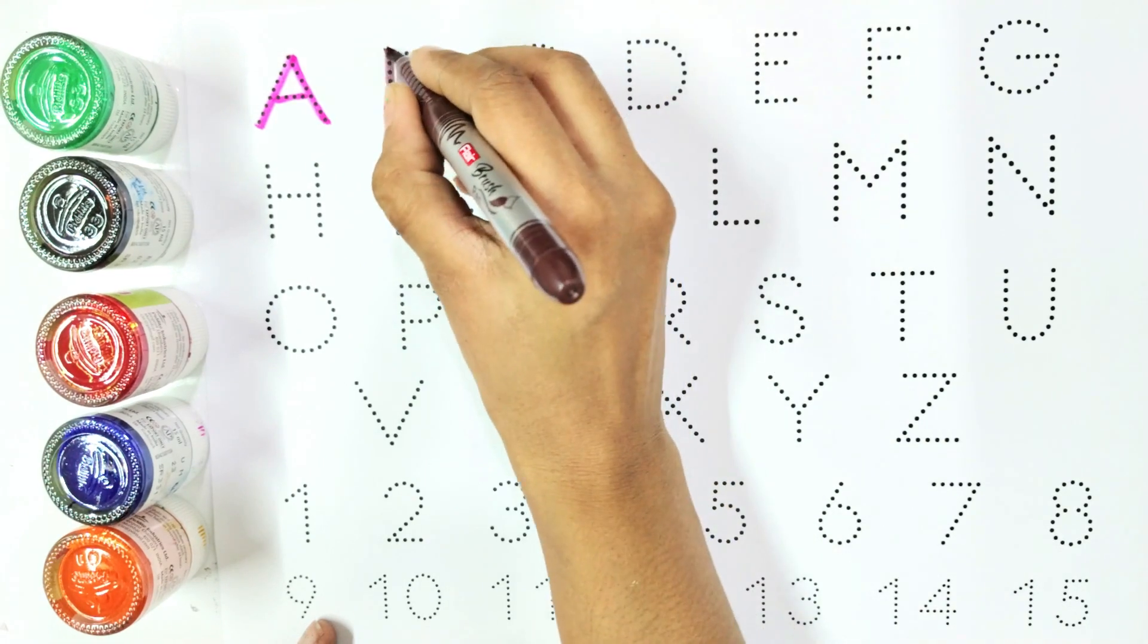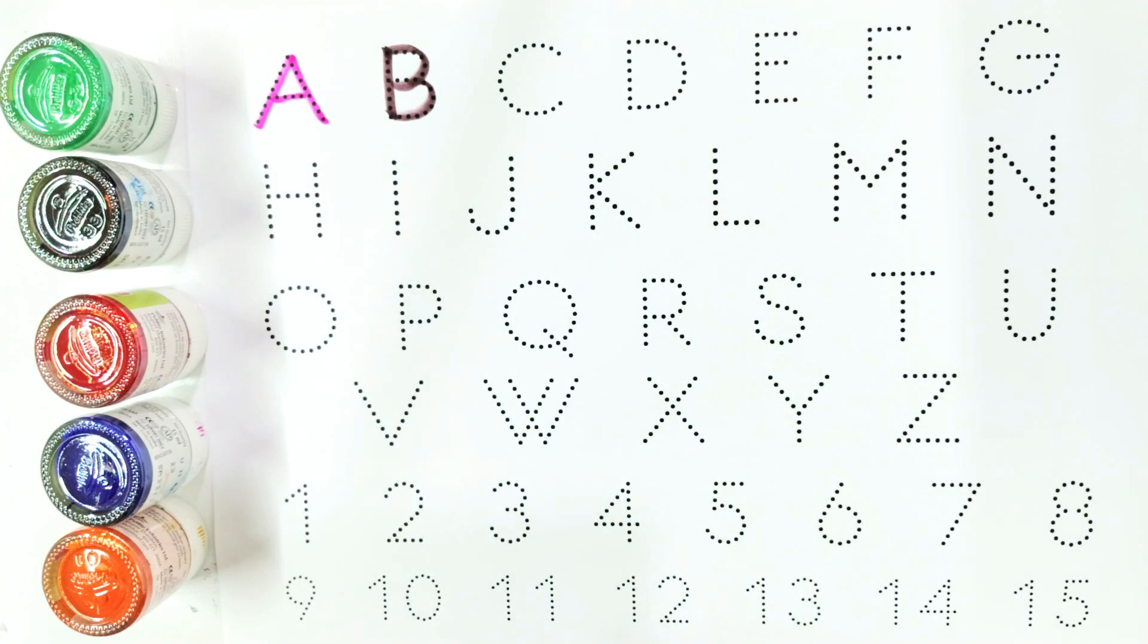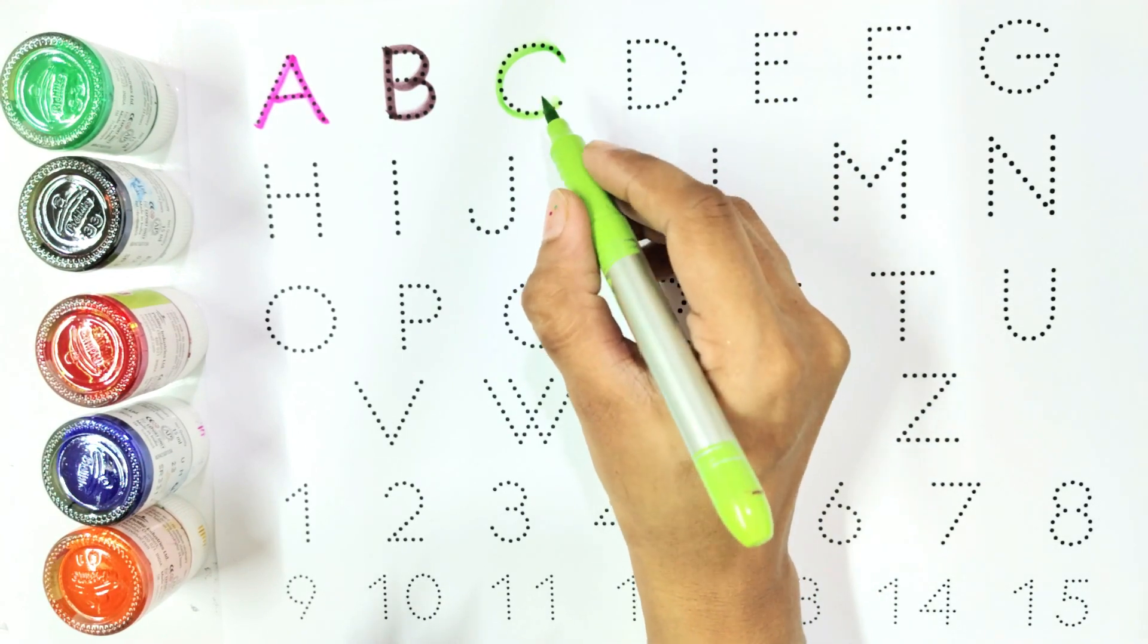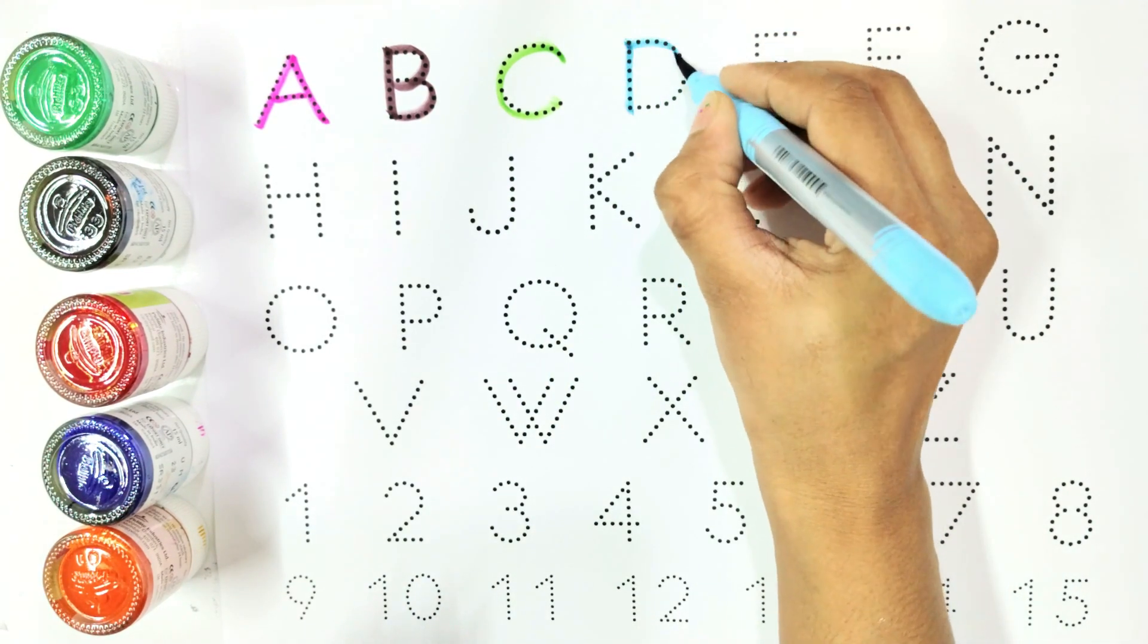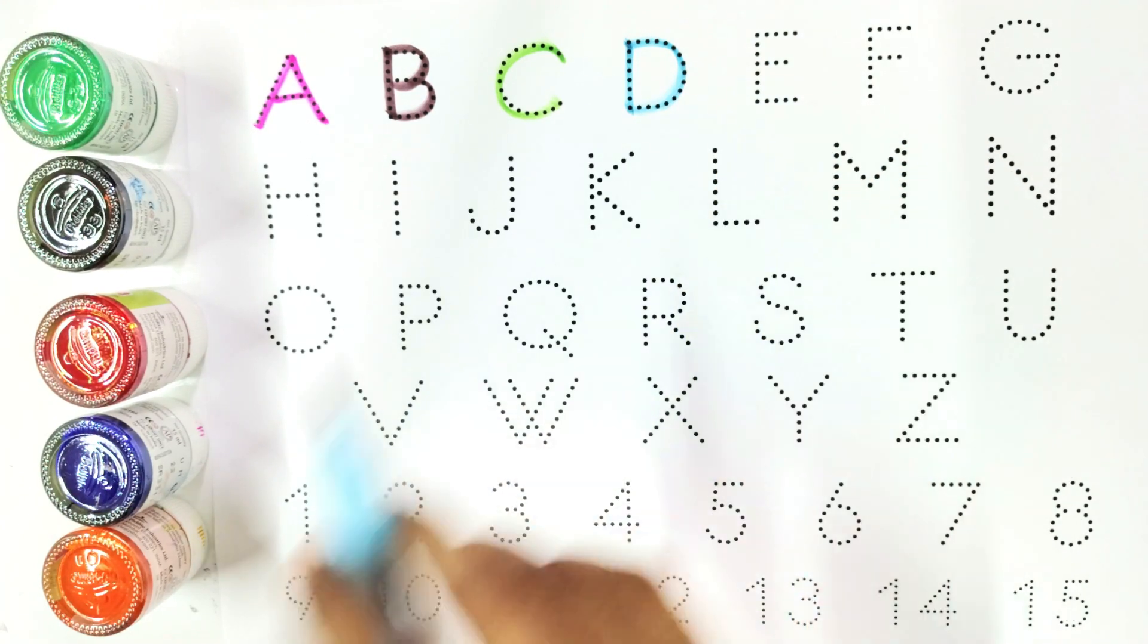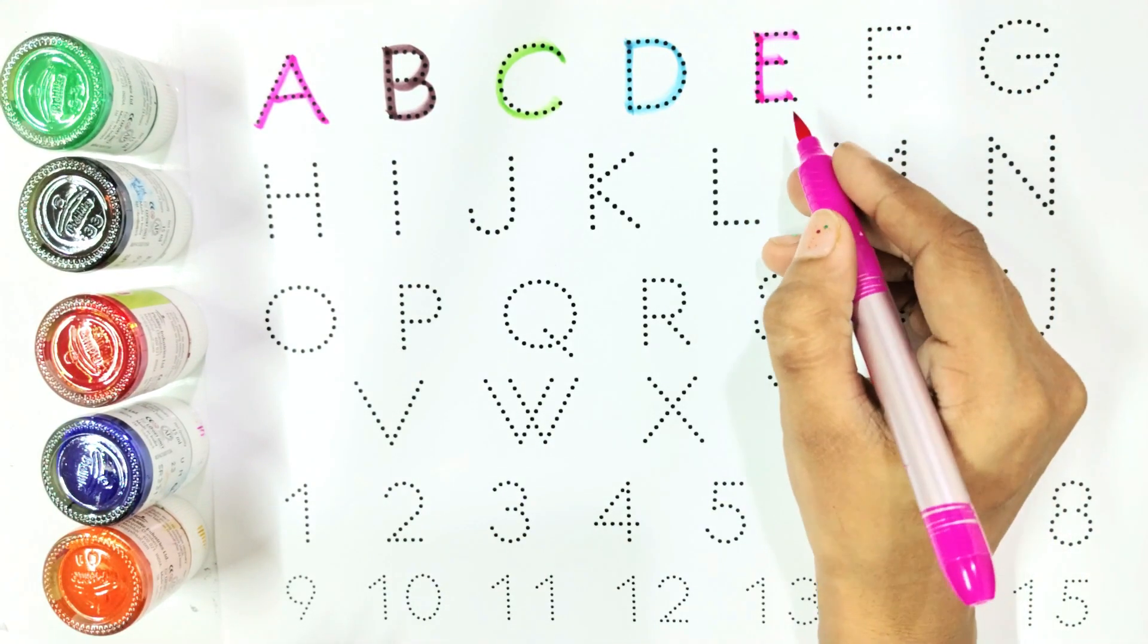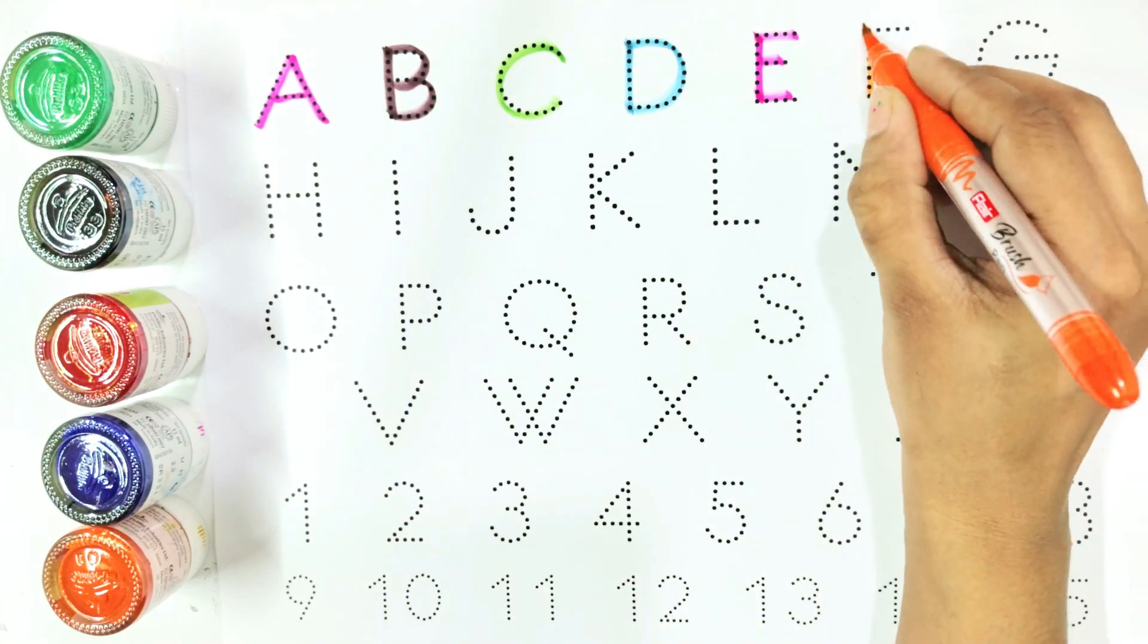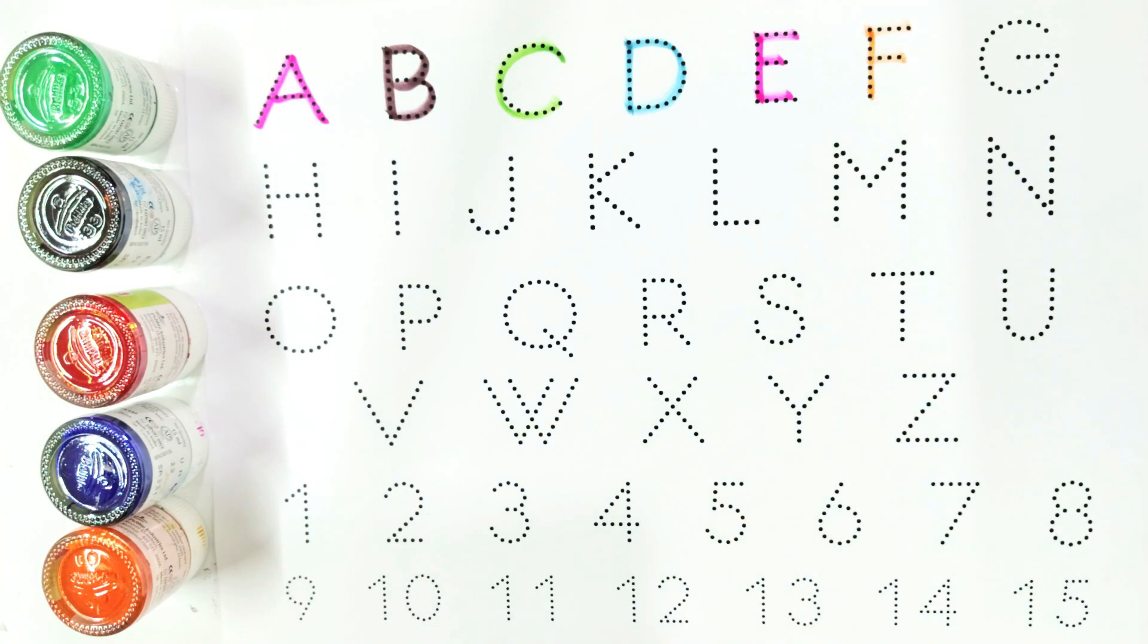me B. B is for ball. Write with me C. C is for car. Write with me D. D is for dolphin.